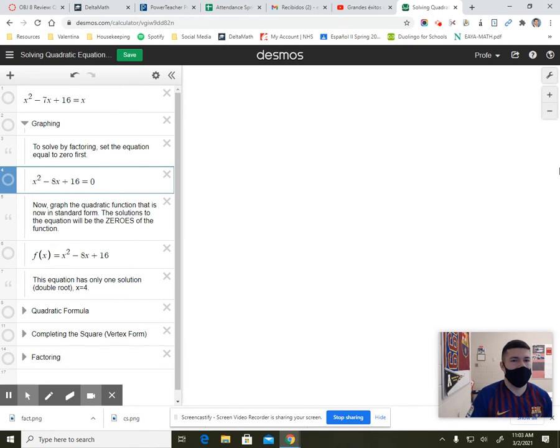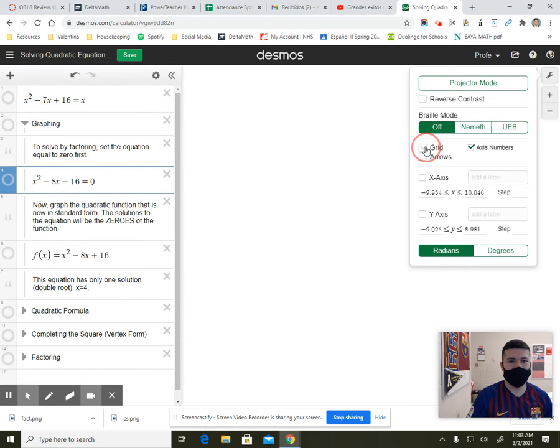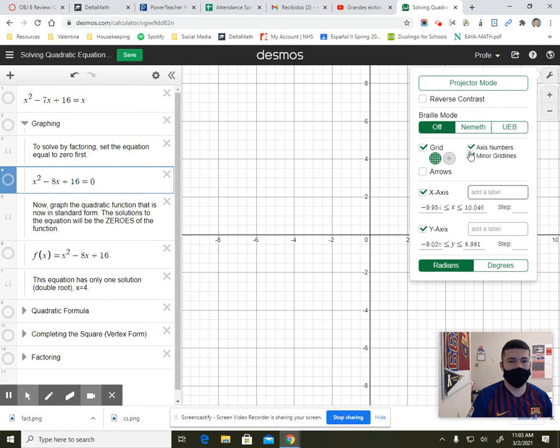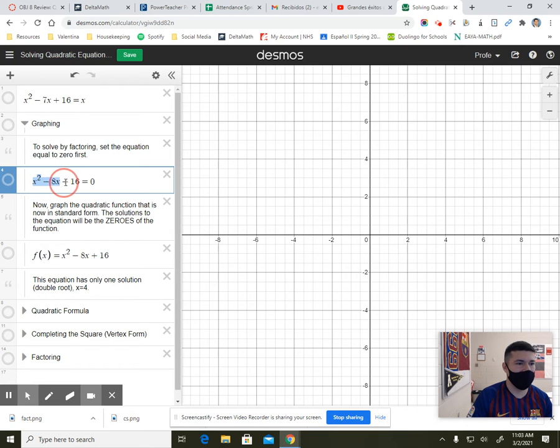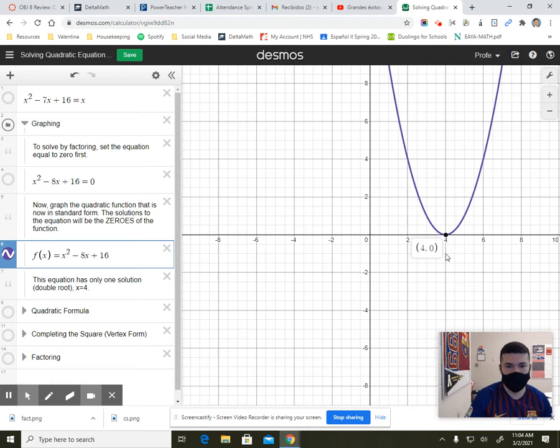Now, let me turn on my grid lines, x-axis and y-axis. So what I'm going to do is I'm going to take the standard form, x squared minus 8x plus 16, and I'm going to graph it as a function. So I'm going to graph f of x equals x squared minus 8x plus 16, and then really all I have to do with this is locate the roots, locate the zeros.